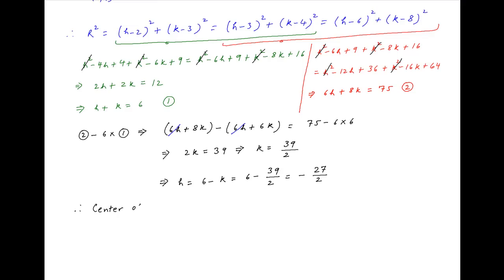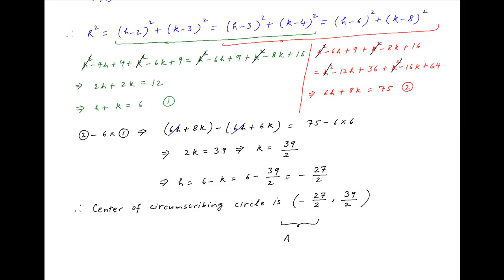Therefore, the coordinates of the centre of the circumcircle of triangle ABC are (−27/2, 39/2), which is the required answer.